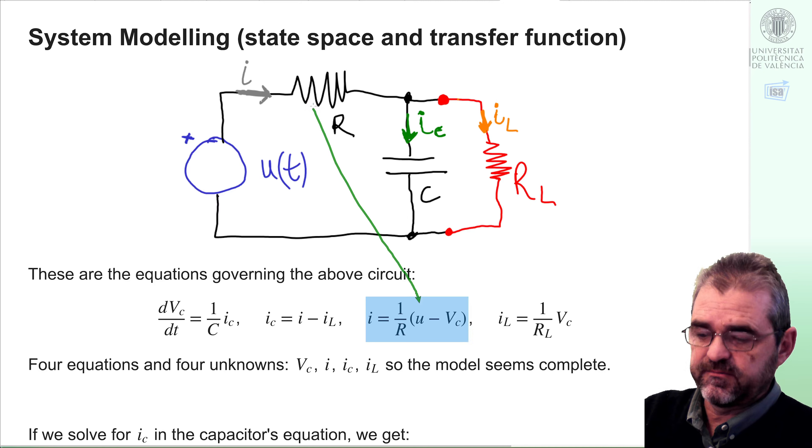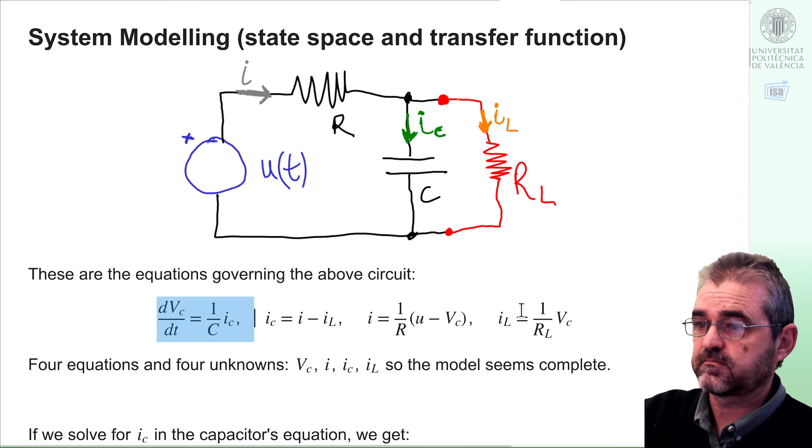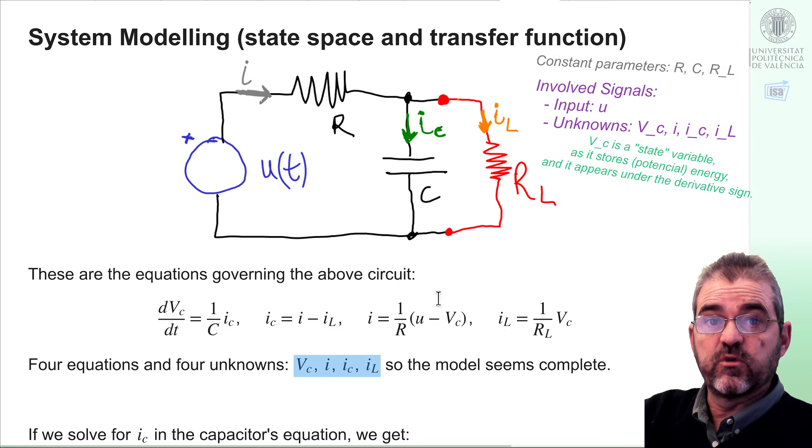And last, we say the same for this red resistor, the leakage current, which is voltage drop equal to capacitor voltage, of course, divided by the leakage resistance. So we have these four equations. And we have four unknowns. U is the input. Then we have R, R sub L and capital C as constant parameters. And these four unknowns that can be solved by suitable differential equation methodologies from the four model equations. So the model is complete.